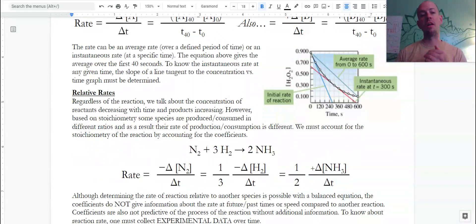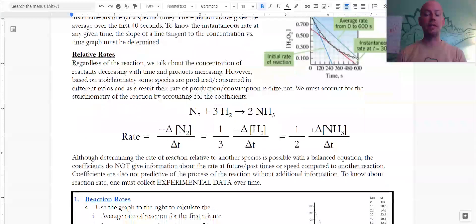But whether we're talking about initial rate, average rate, instantaneous rate, or even maybe a final rate, which is often where the reaction stops, or as we'll see later, reaches equilibrium, we can compare one chemical to another.